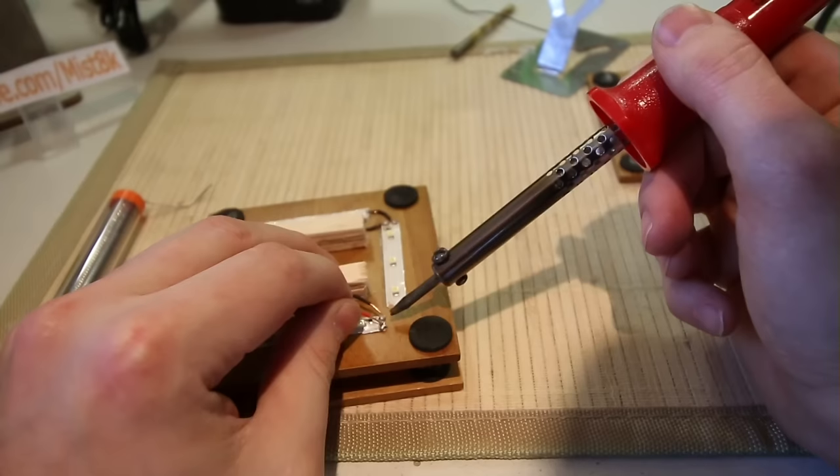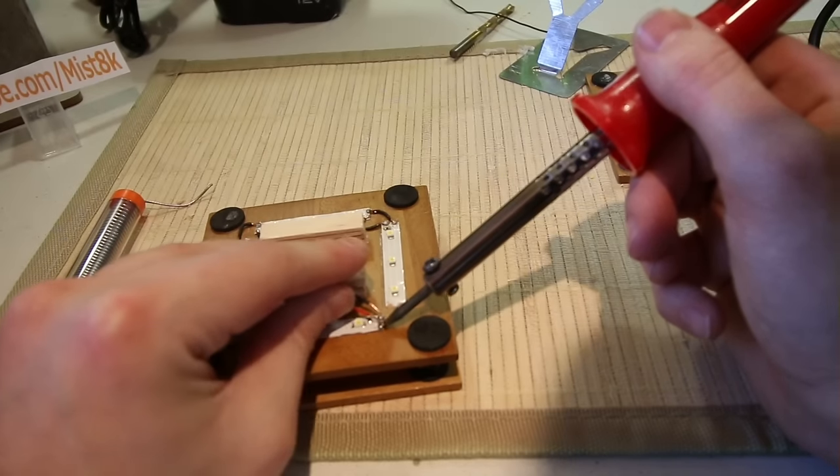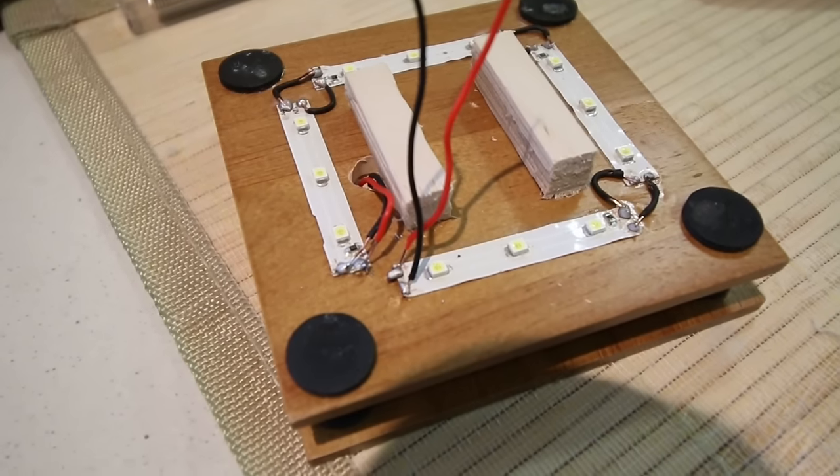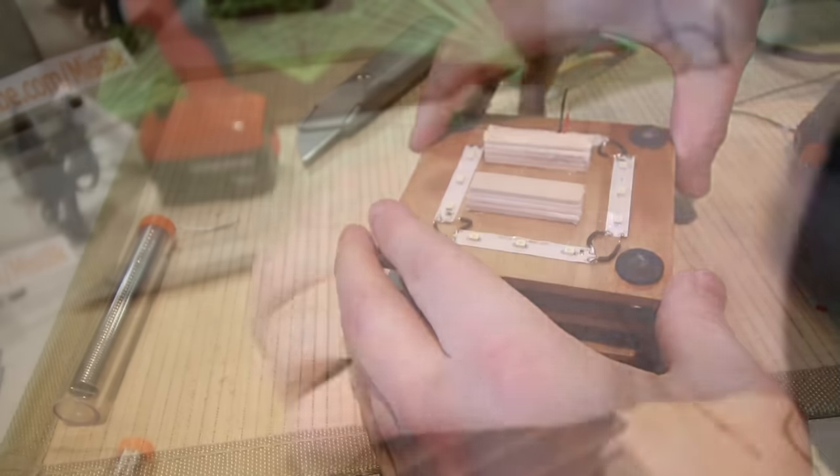There we go. The two wires are then soldered to the circuits on the next coaster. And then two wires are soldered to the end of that circuit, and the process is repeated until all the layers are stacked up.